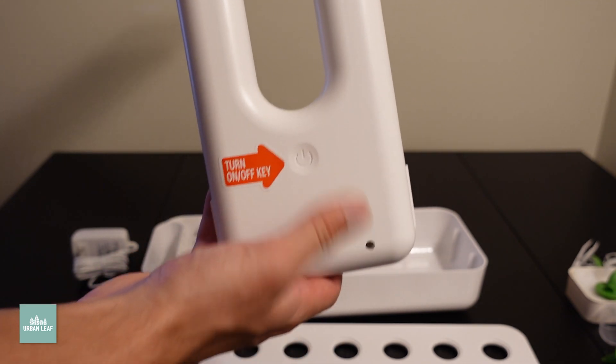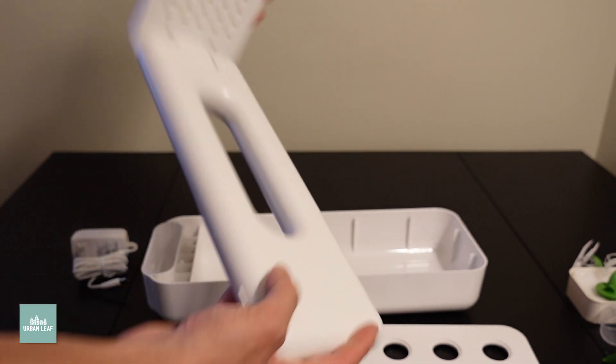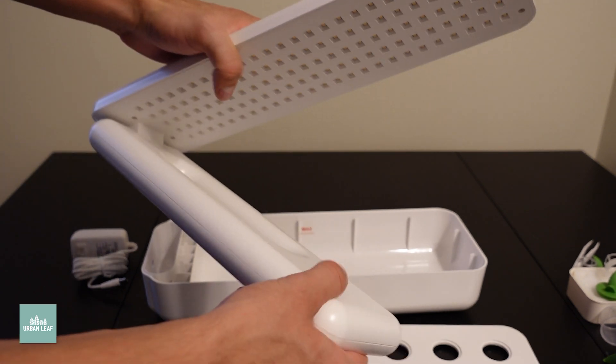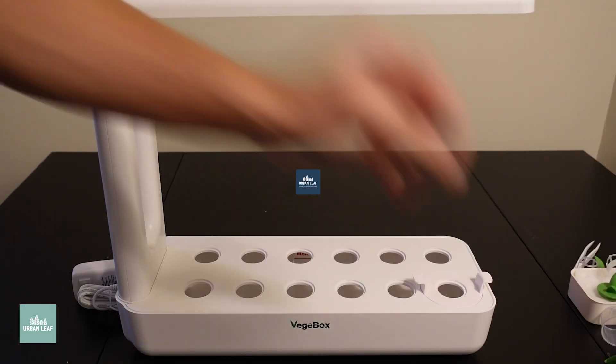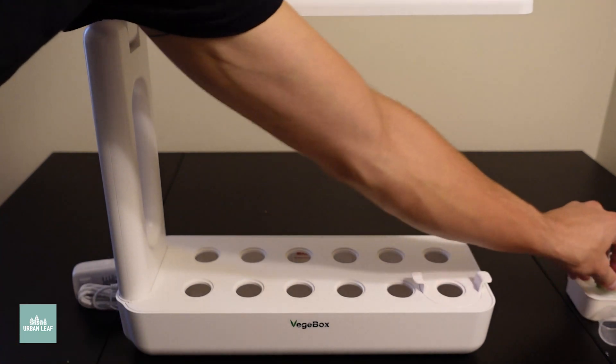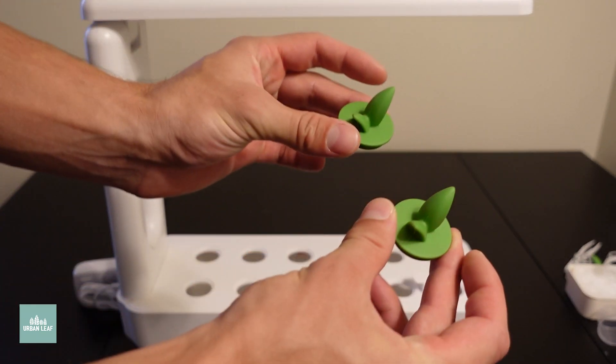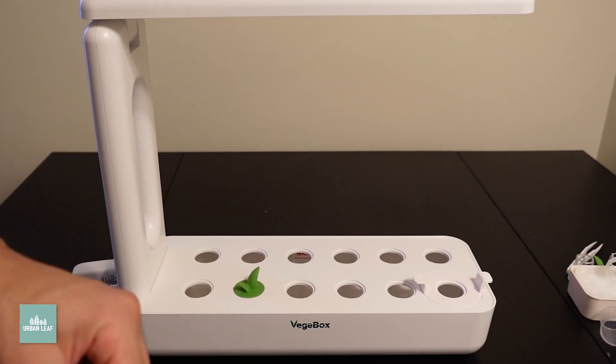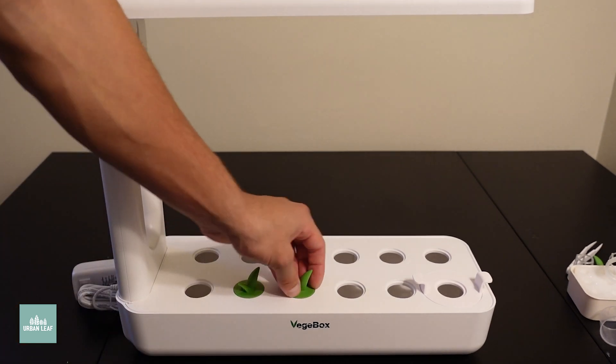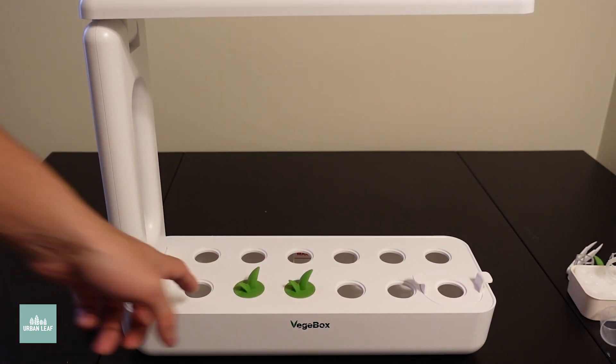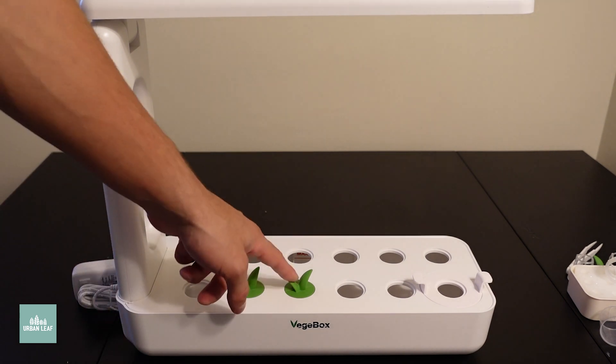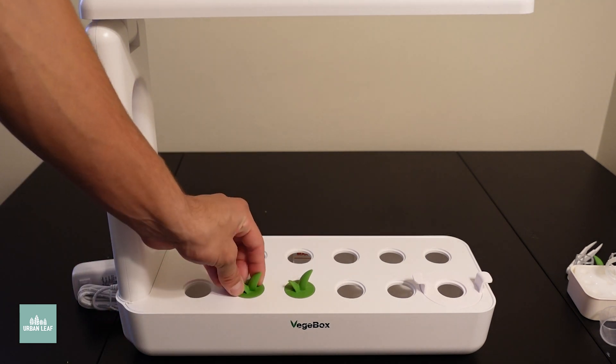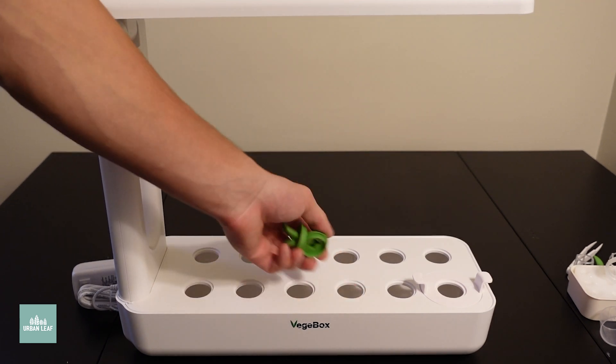Also a touch sensor button on the back here, which is always cool and becoming the norm for these sorts of units. And just to come back to what these pieces are exactly, they are simply light blockers, so that you don't have any algae or other unwanted growth occurring within the reservoir. They're going to block the light from getting in there and causing any of that growth if you are leaving any of these holes without a plant growing out of them.